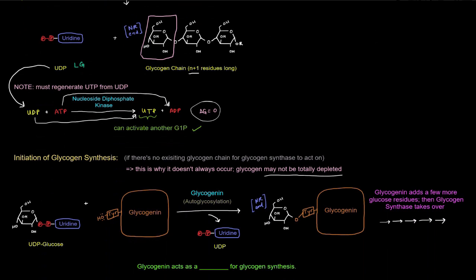So glycogenin, what's the deal with that? We still have to have UDP glucose because that's the donor of the glucose unit, but instead of donating to an existing glycogen chain, what it does is that an OH group on a tyrosine residue on glycogenin, which is a protein, will actually be the thing that attacks the carbon number one of the glucose on UDP glucose kicking off the UDP. So we have that UDP then that comes off as a leaving group.